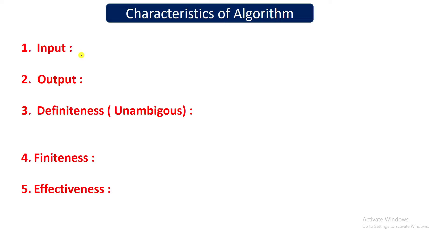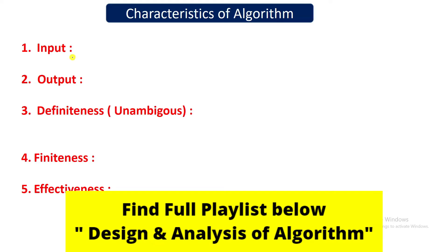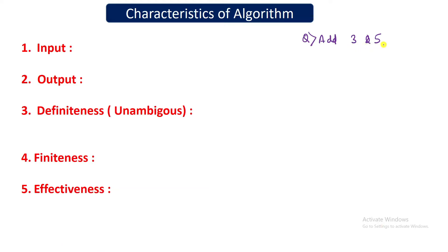The first characteristic is that your algorithm should take input. For example, if you are given a question to add two numbers and those numbers are already provided — say three and five — you just add them directly, store the answer in a variable called sum, and print sum. In this case we have taken zero inputs from the user.